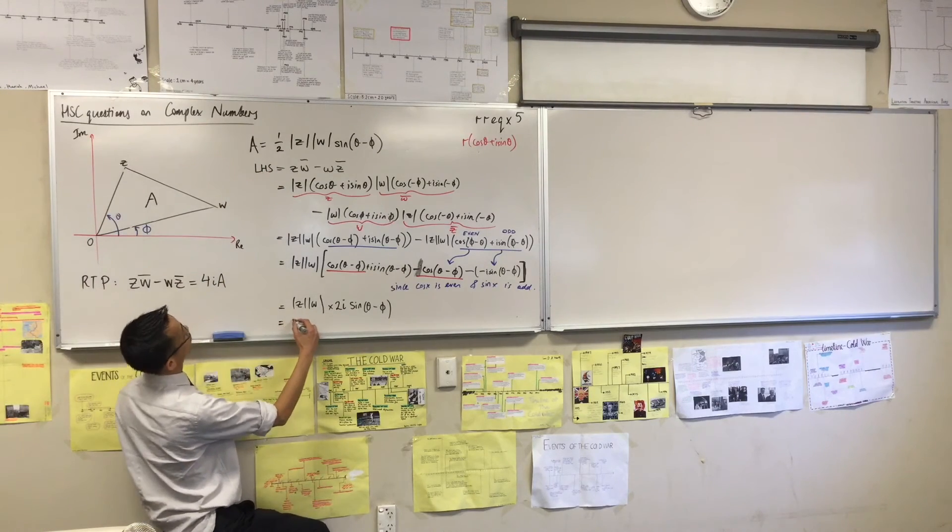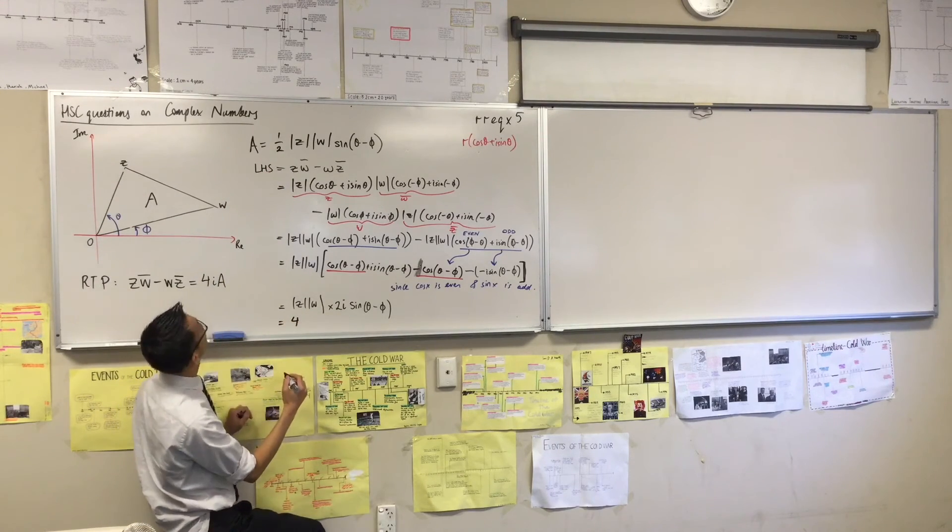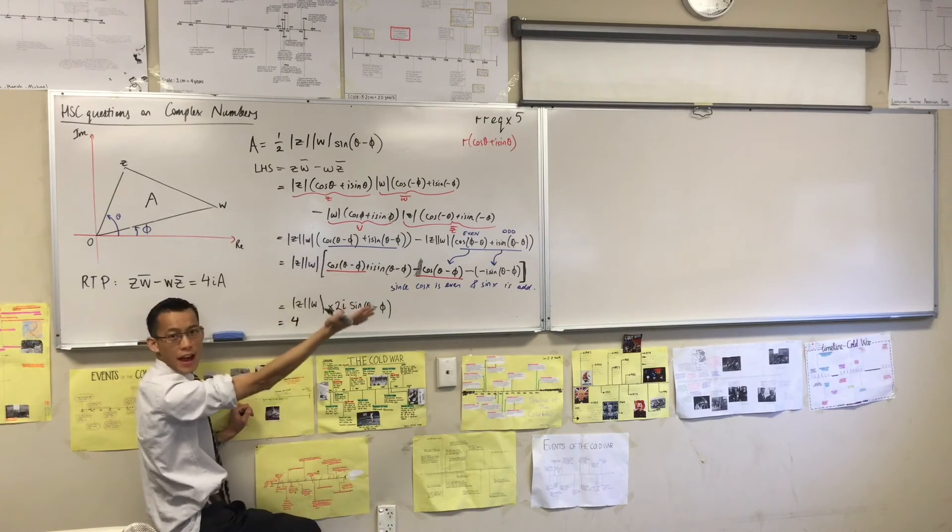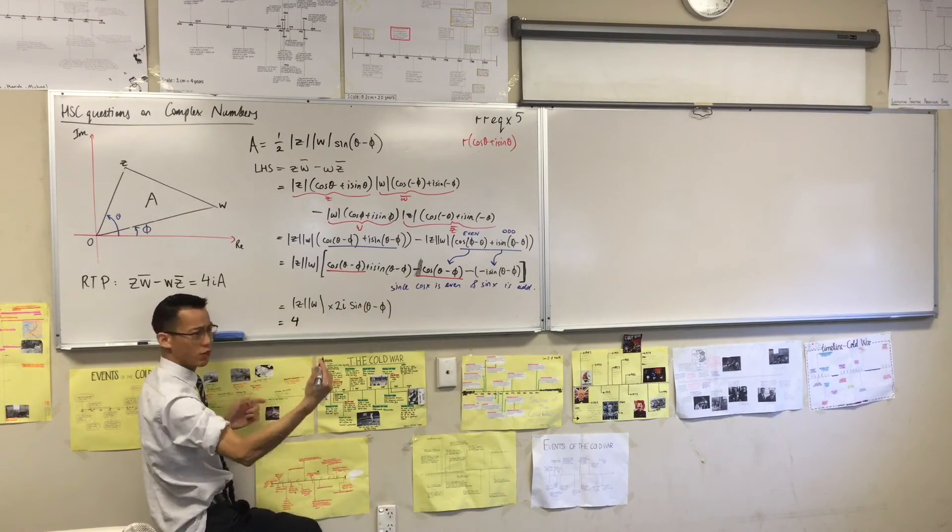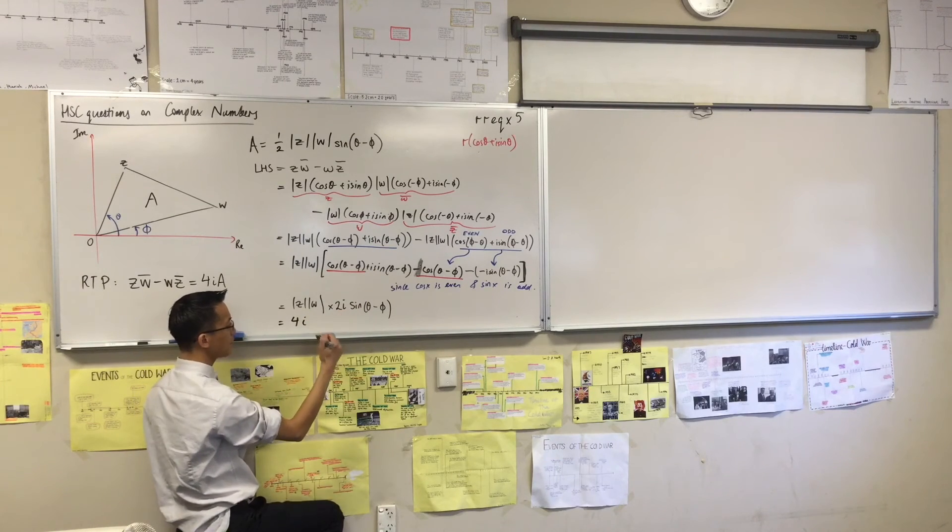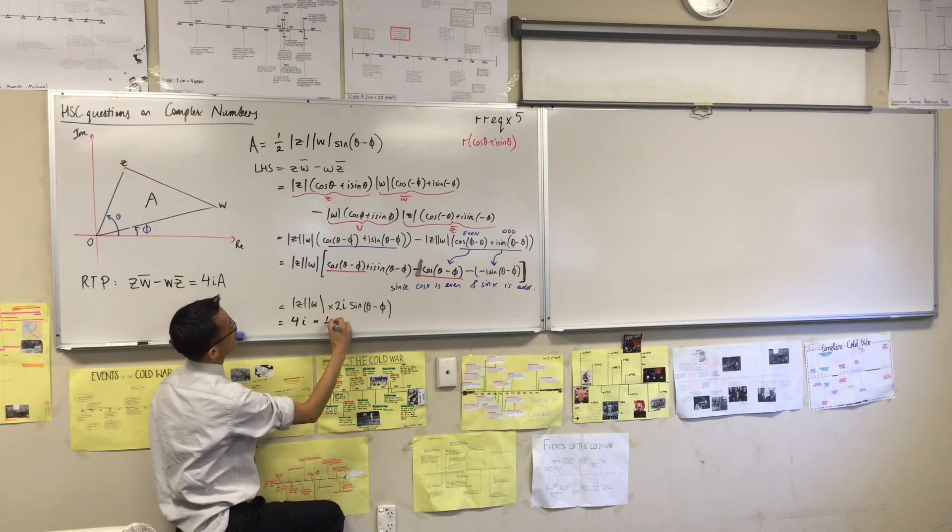So I'm going to write the 4 out the front. I guess I'll also write the i out the front, because the area, the area doesn't have an i in it, does it? It shouldn't, because it's a real number. So I'll write the i out the front, so I've taken that guy out. That leaves me with a half.